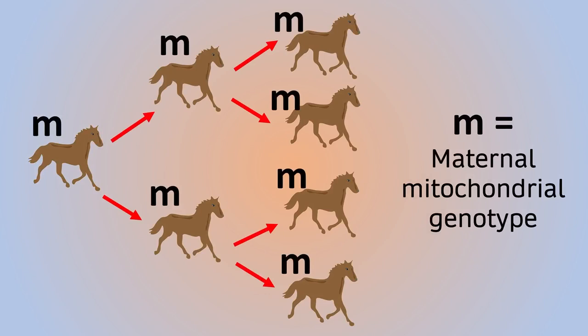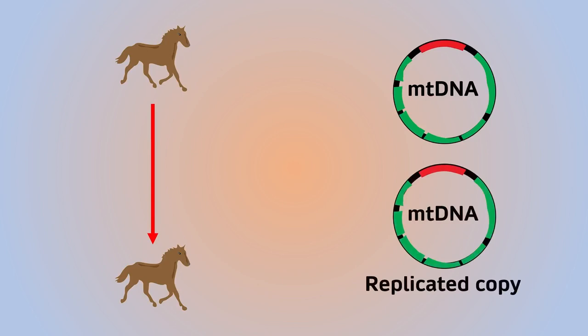This has two significant implications. Firstly, it means we can trace a straight matriarchal line through generations of horses. Secondly, since mitochondrial DNA isn't being recombined between two parents, almost all genetic variation occurs through spontaneous substitution mutations, which are simpler than genetic recombination to track.